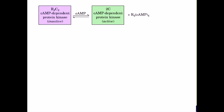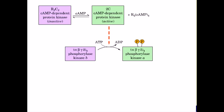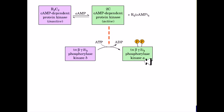Phosphorylase kinase is activated by phosphorylation by cyclic AMP-dependent protein kinase and ATP. As you can see in this picture, maximal activation is achieved when both the alpha and beta subunits are phosphorylated.